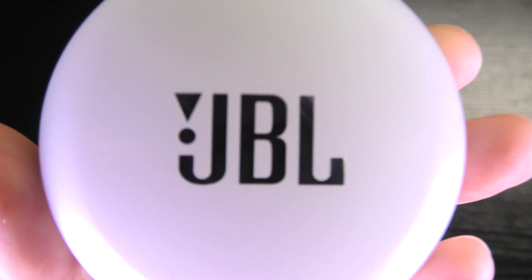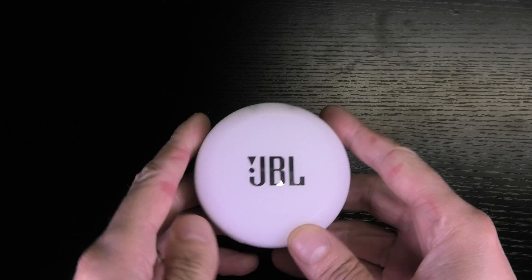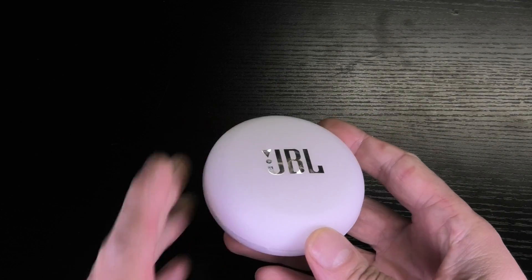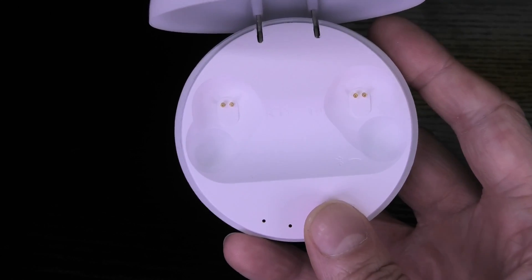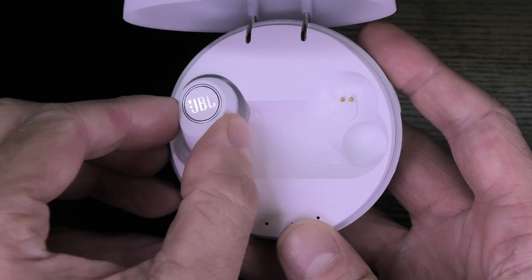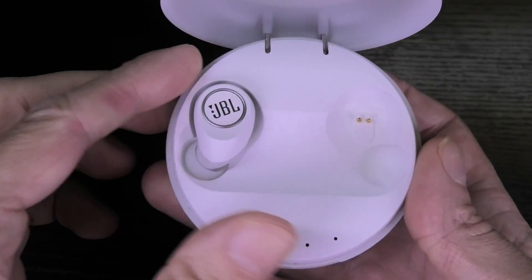Hey guys! So I have here the charging case of my truly wireless or TWS earbuds and I am having the problem that one of the earbuds is not staying in place when I am trying to charge it inside of the charging case.